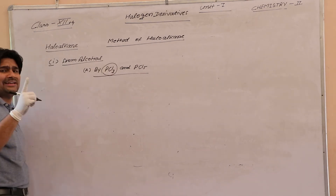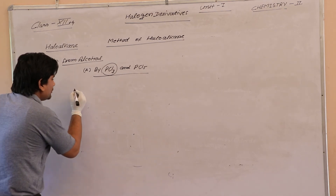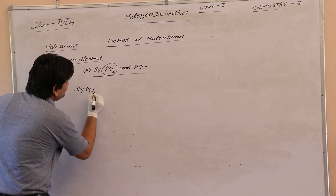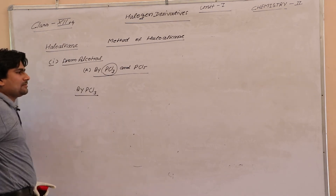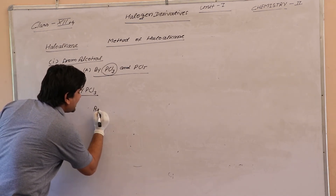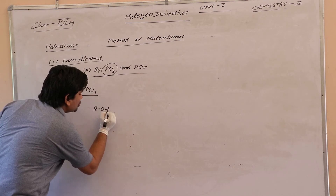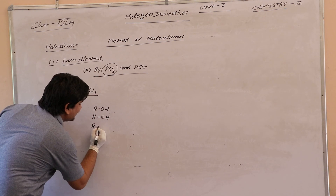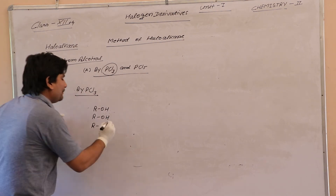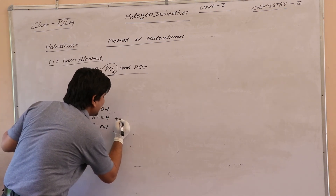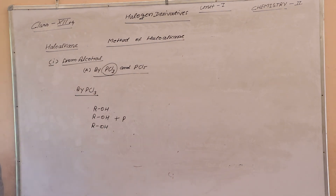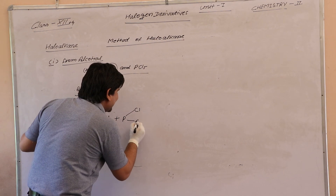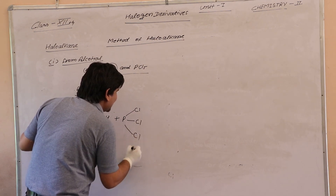By PCl3: three molecules of R-OH react with PCl3 to give the product. The product contains chlorine.